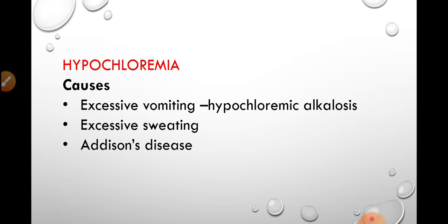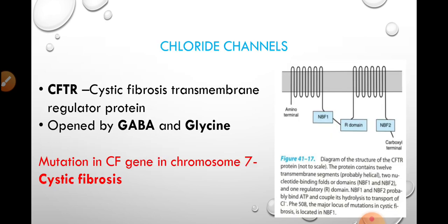Hypochloremia is when chloride levels fall below normal. The most common cause is excessive vomiting — chloride ions are present in HCl in gastric juice, so when there is excessive vomiting, more HCl is lost, leading to lower chloride levels. As a compensatory mechanism, plasma bicarbonate rises, leading to hypochloremic alkalosis. Other causes include excessive sweating, where more chloride is lost through sweat. In Addison's disease, aldosterone levels are lowered, so renal uptake of chloride ions is also reduced.